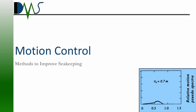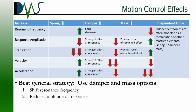So the question becomes: I've got an answer for my seakeeping analysis — how can I do better? When we're talking about motion control, we have to think of the different effects and the different types of forces. Looking at this table, we've got spring forces, dampers, masses, and an independent force. I can create physical effects that will increase one of these, and the question is how that's going to interact with all of the elements of my seakeeping. One of the biggest questions is how is that going to change our resonant frequency?